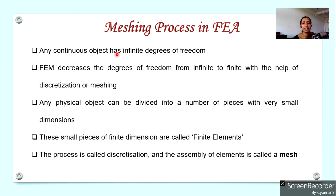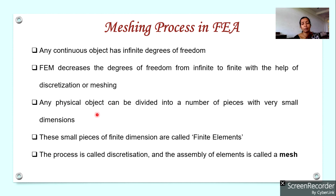Now let us see the meshing process in FEA in detail. Any continuous object has infinite degrees of freedom if analyzed as a whole. FEM decreases the degrees of freedom from infinite to finite with the help of discretization — any physical object is divided into a finite number of elements. This is known as discretization or meshing, and the elements are known as finite elements. The resulting structure obtained is known as a mesh.